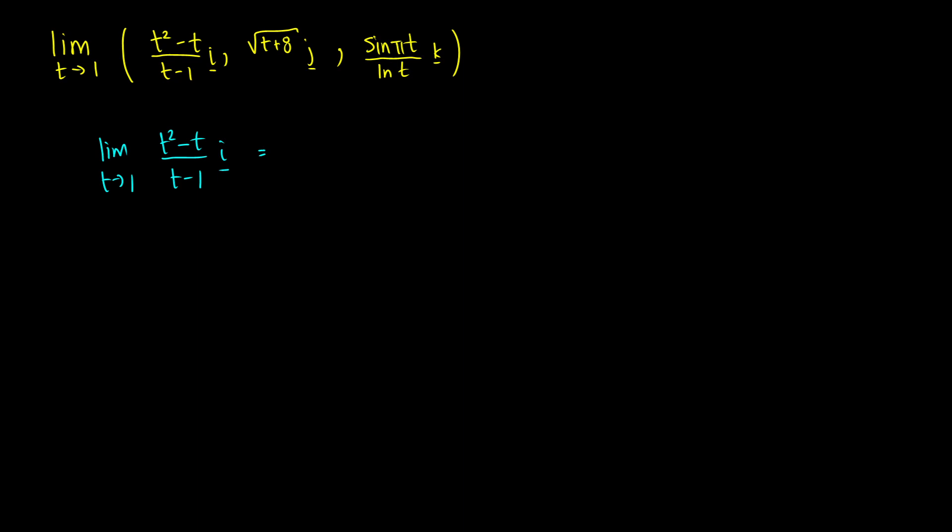To do this one, we can't just plug one in because we get something divided by zero, but we can do some factoring. So this is t times t minus one over t minus one, which gives us t. So we want to find the limit as t approaches one of t, which just gives us one.